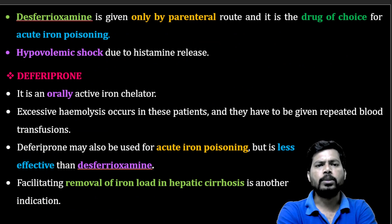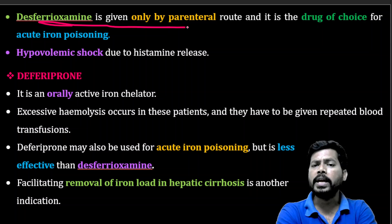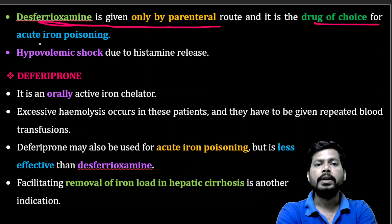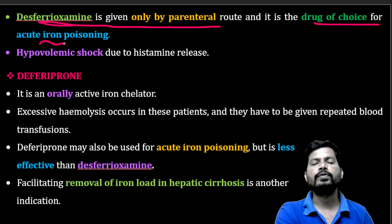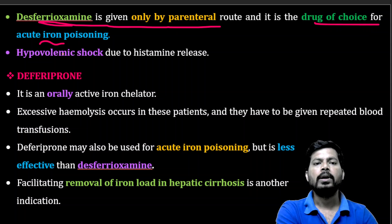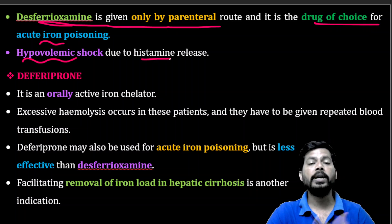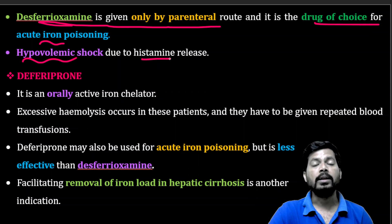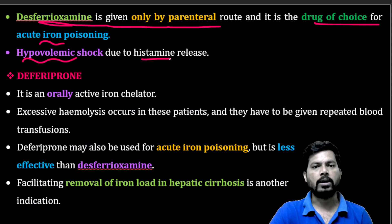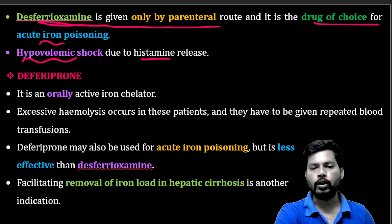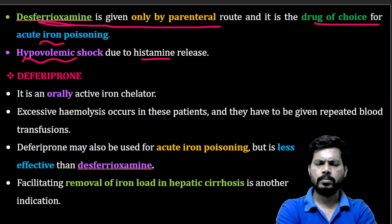Desferioxamine is given only by the parenteral route and is the drug of choice for acute iron poisoning. It may produce hypovolemic shock — decreased blood volume — due to histamine release, which decreases blood pressure.